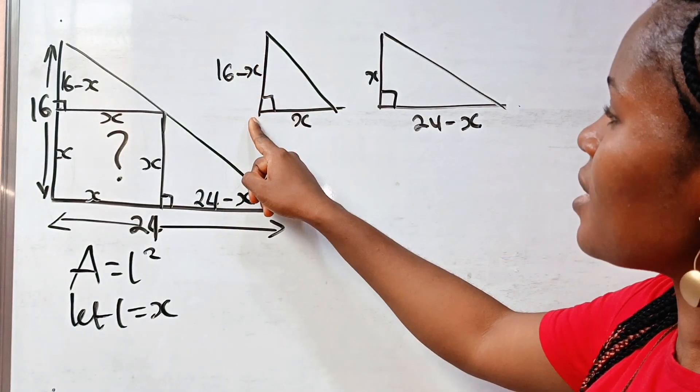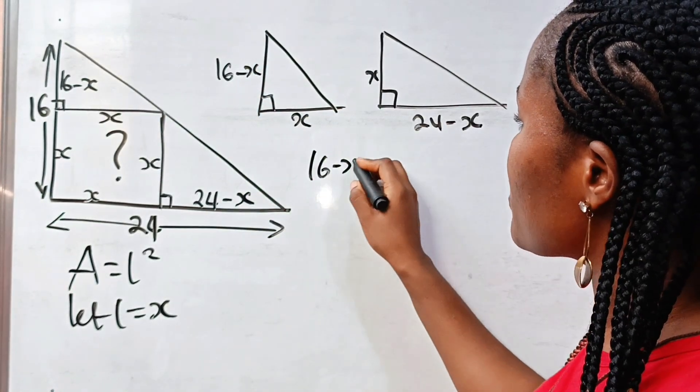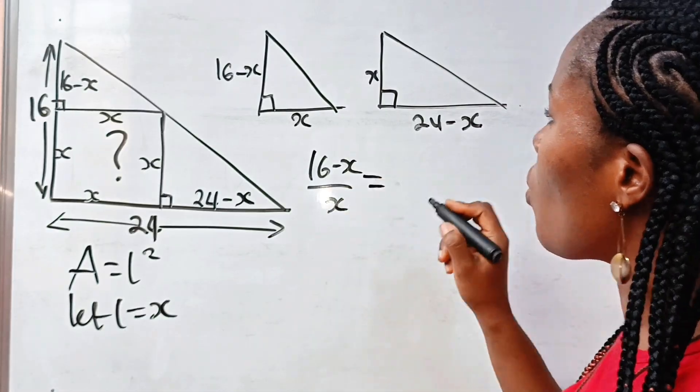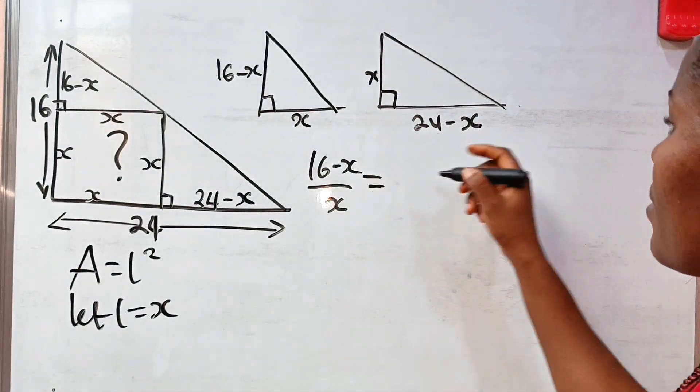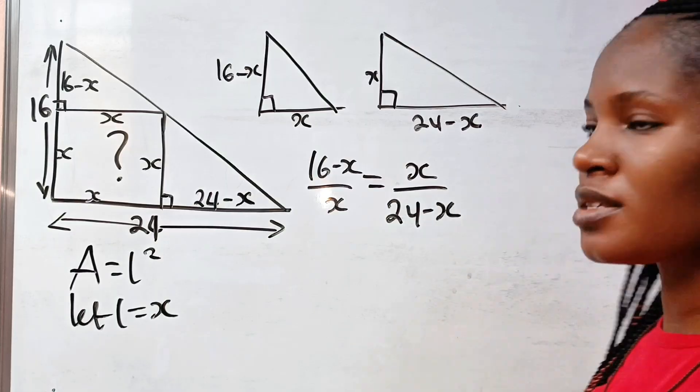So if we say 16 minus X divided by X, that is 16 minus X divided by X should be equal to X divided by 24 minus X.